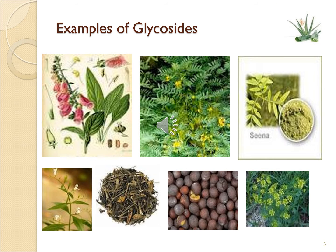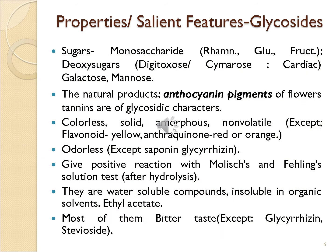This slide depicts examples of glycosides. The first includes digitalis, then senna plant, senna leaf, calumba plant, calumba stem, mustard seeds, and mustard plant. Now let us have a look at the properties of glycosides.